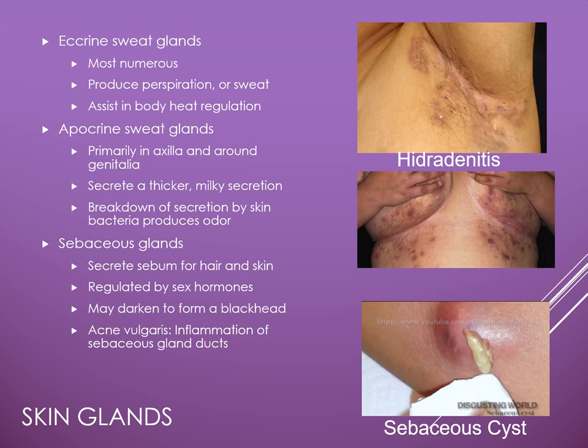As puberty approaches, sex hormones increase, which increases the release from sebaceous glands, and this can result in blackheads or pimples in the teenager. Severe types of acne — the most common kind referred to as acne vulgaris — is inflammation of the sebaceous gland ducts, and it most frequently occurs during adolescence.